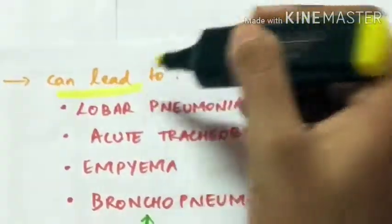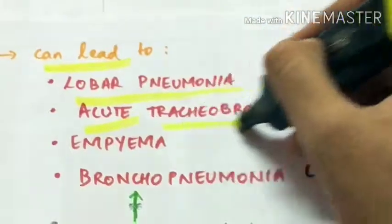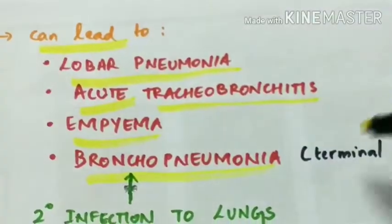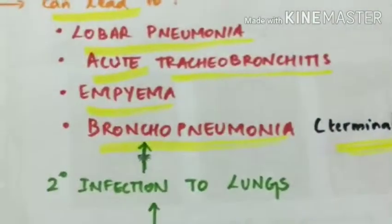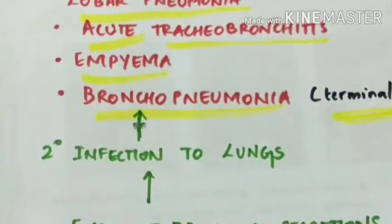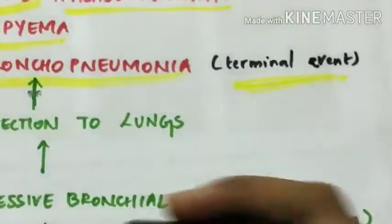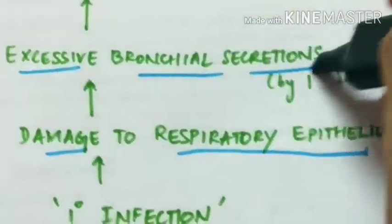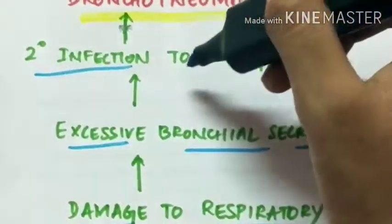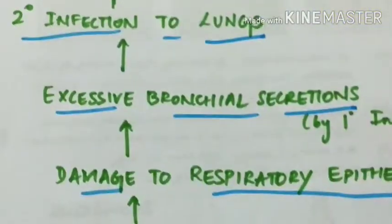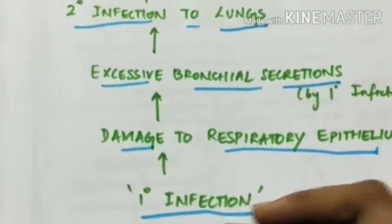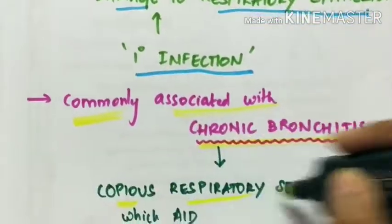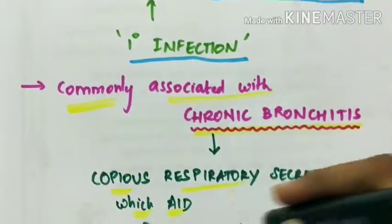The infection can lead to lobar pneumonia, acute tracheobronchitis, empyema, and bronchopneumonia. This is the terminal event. Let's now see how bronchopneumonia is caused. First, there is primary infection which damages the respiratory epithelium and causes excessive bronchial secretions, which progresses to secondary infection of lungs. This is also commonly associated with chronic bronchitis because in chronic bronchitis there is copious respiratory secretions which help pneumococcal invasion.